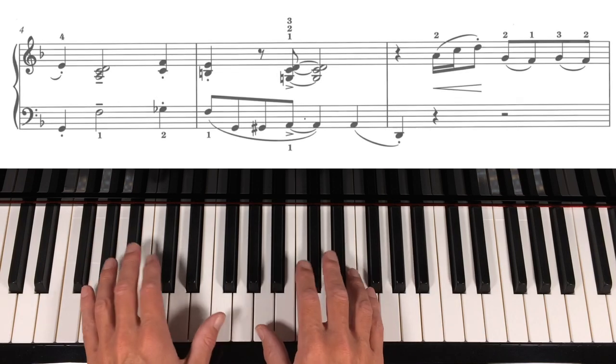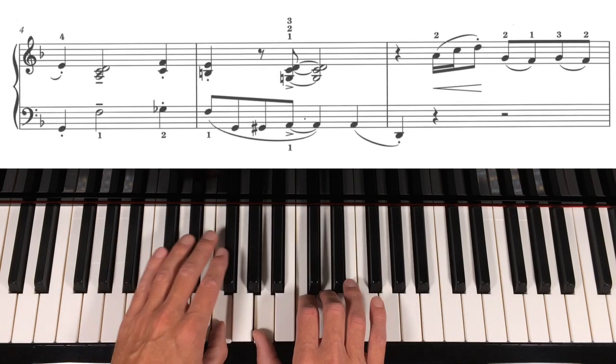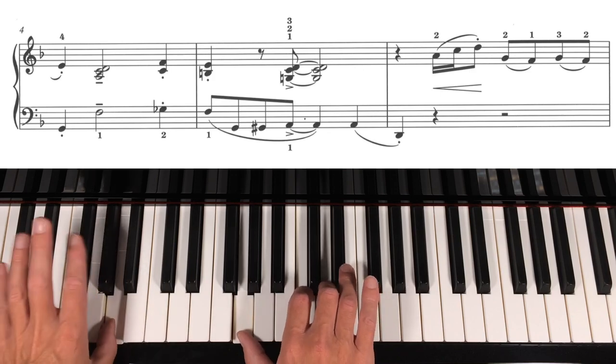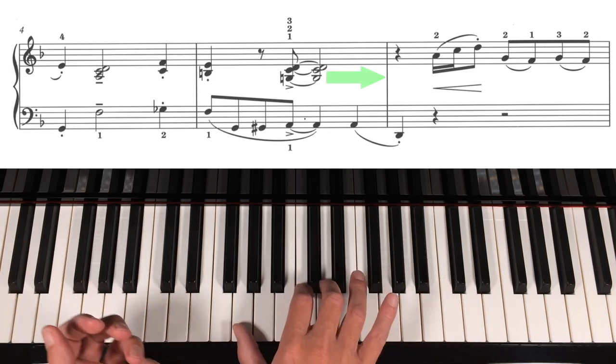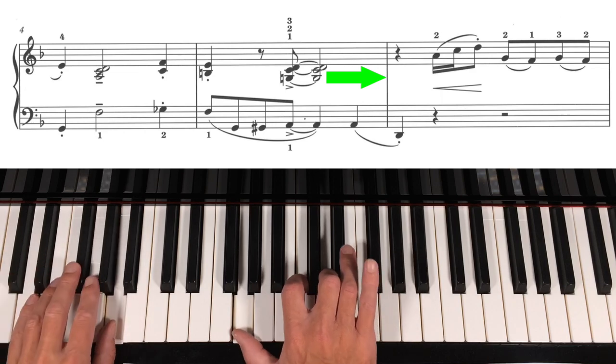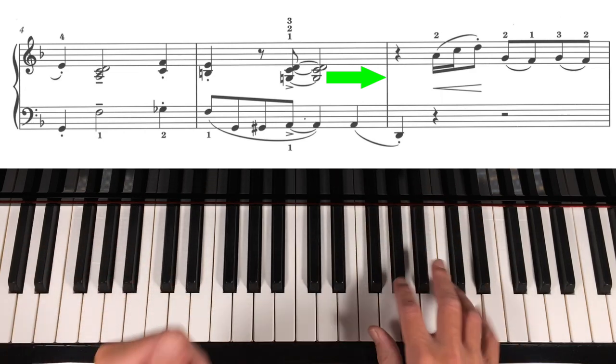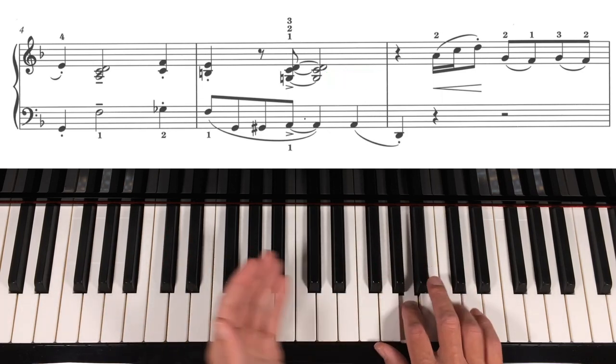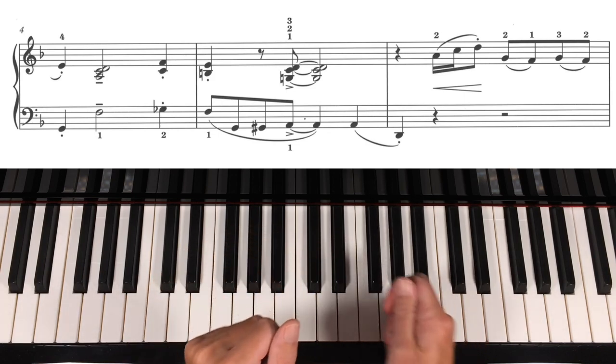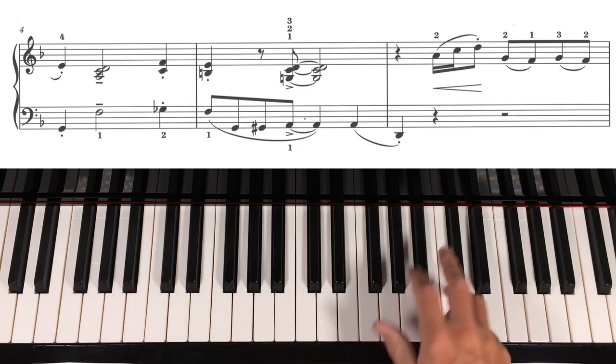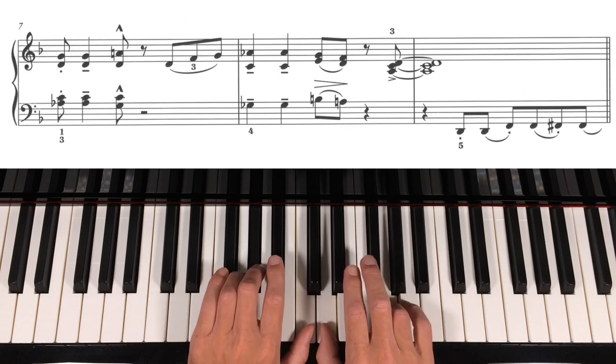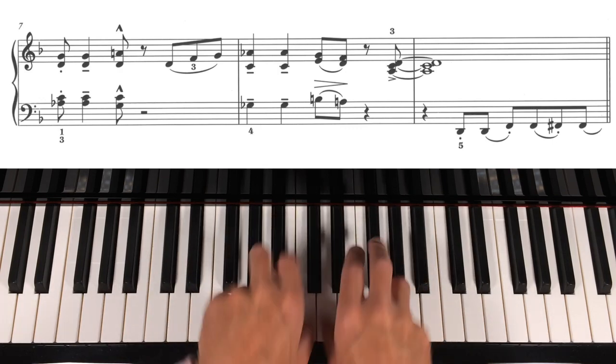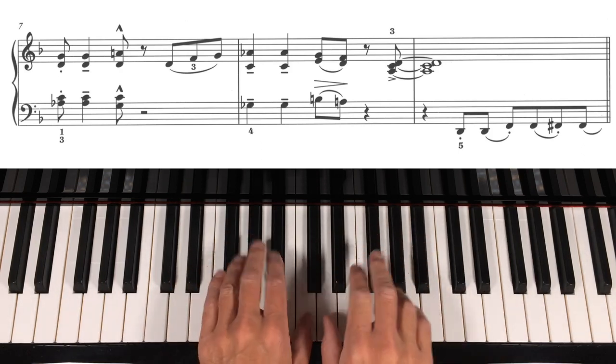So now let's go from bar four. Tenuto. Accent. And notice how I held onto that chord until the D. Aim up for the D. Da da da da da. So hold.